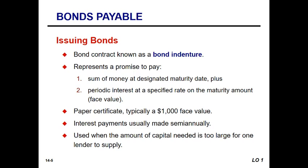Corporations use bonds when they have a very large need for capital that is too much for one lender to supply, or where the risk to one lender would result in a higher interest rate. So corporations take that large need, chunk it up, and allow many lenders to participate. This substantially lowers the risk on any one lender at a thousand-dollar face value, and therefore the interest rate borne on that thousand is much less.